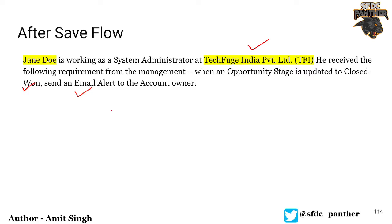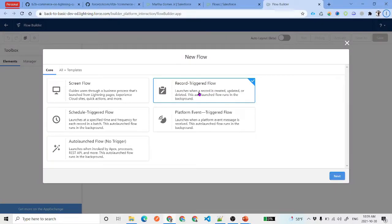Based on the decision diagram, since we want to send an email alert, we will use an after-save flow. Similarly, if the requirement were to clone the opportunity or create a new opportunity under the same account when the stage is Closed Won, we would also go with an after-save flow.